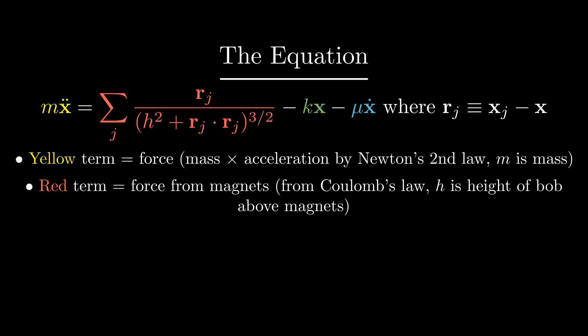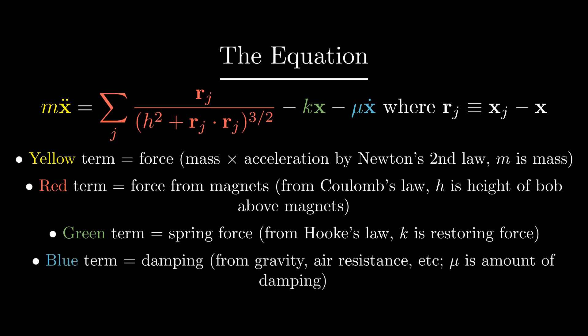and the h constant represents how high the bob is above the magnets. The second part of this equation describes the restoring force on the bob to its position at rest, which is equal to the negative of some constant k times the displacement, as per Hooke's law for oscillators. The third and final part of the equation describes damping, which is described by the mu coefficient times the velocity of the bob. This force represents gravity, air resistance, and the like.